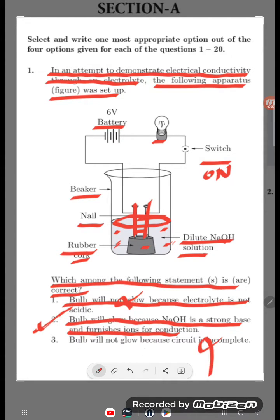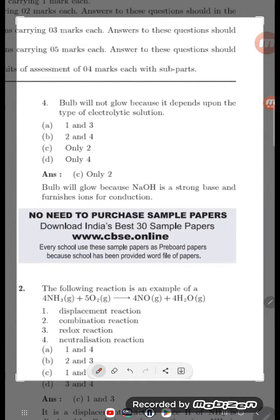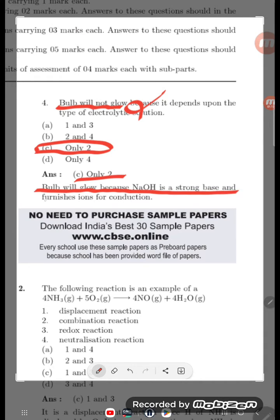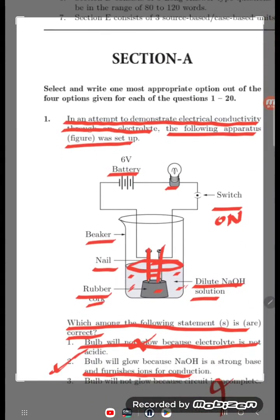Obviously bulb will glow, students, because NaOH is there. Bulb will not glow - this is wrong. So the correct option is only 2. Bulb will glow because NaOH is a strong base and furnishes ions for conduction. This is the answer, students.